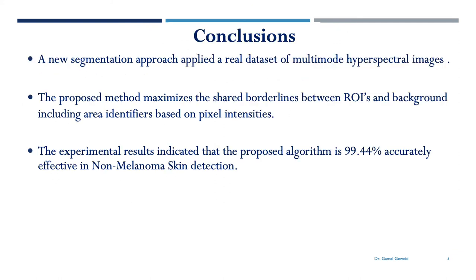In conclusion, a new segmentation approach is applied to a real dataset of multi-mode hyperspectral images. These images have more than two regions of interest and involve the use of spatially conditional probability intensity functions. The introduced method maximizes the shared borderlines between the region of interest and background, including area identification based on pixel intensity.